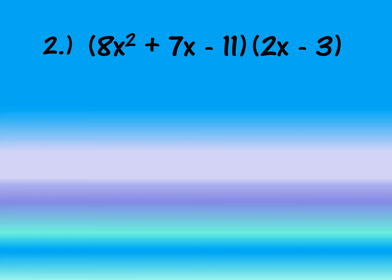Now let's have our second example using both methods. We will use the vertical method first. Write vertically: (8x² plus 7x minus 11) multiplied by (2x minus 3).